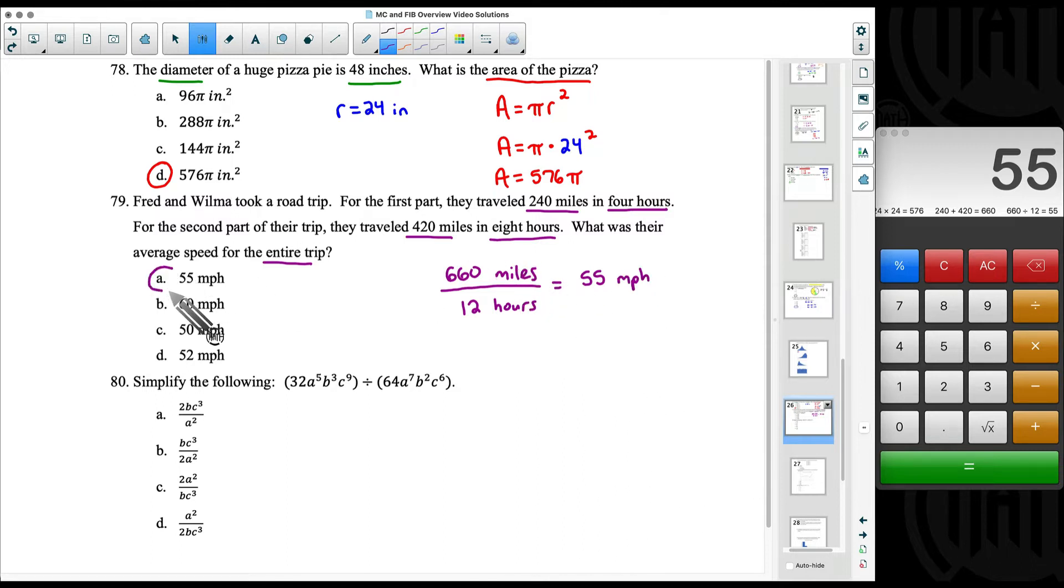Now you would not get that answer had you found the average speed for the first part, then the average speed for the second part, and then tried to do something with those. That is not how you find the average speed for the entire trip.